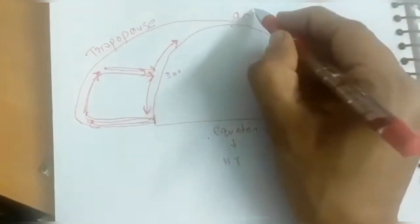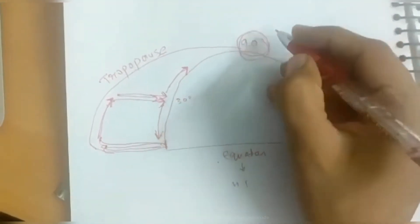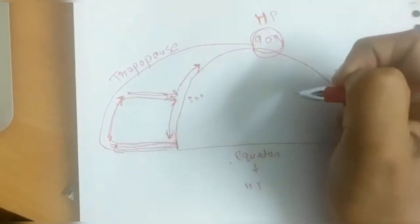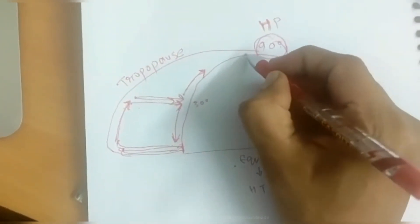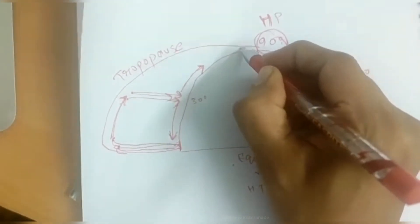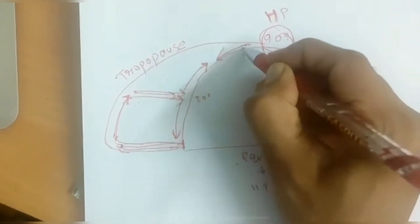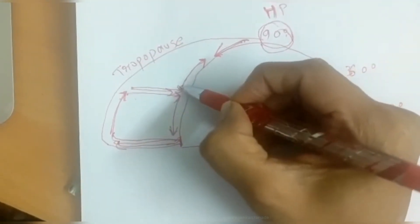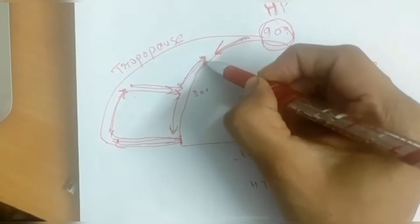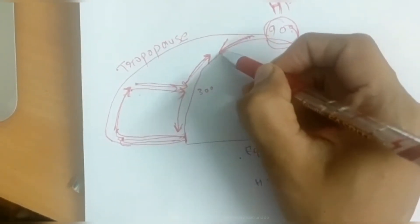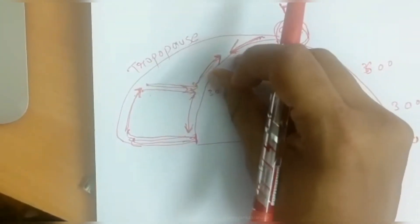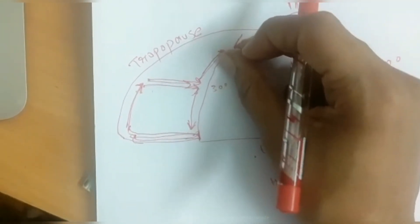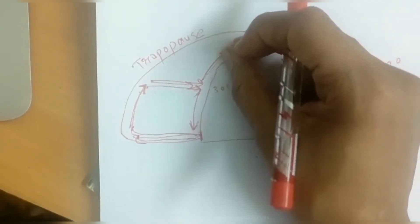Now imagine this is the polar area — there is low temperature and high pressure here. The air moves away from high pressure, so air is moving away from the polar areas. One air current is coming from the tropics and the other air current is coming from the polar areas. Both these air currents are mixing here.